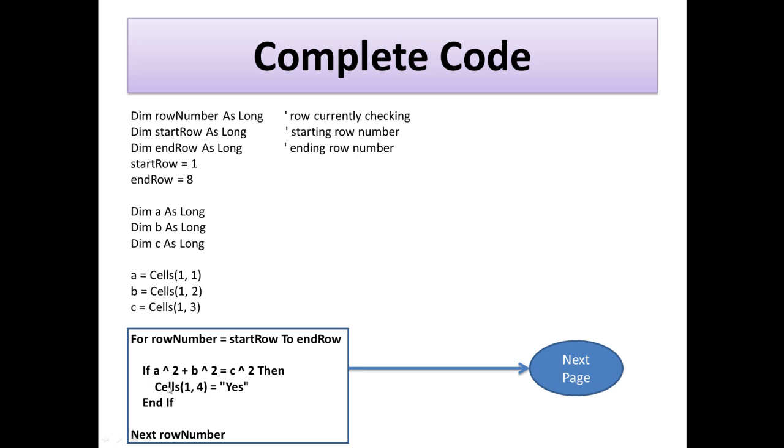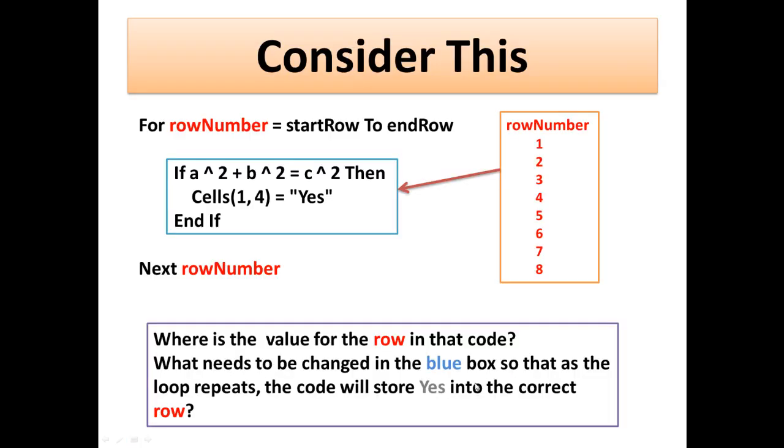But at the same time, let's just go ahead and look at this for loop. Now, the for loop is basically taking a variable, row number, and it's changing that variable from start row to end row. And that's what we see in the box here. As the loop goes around, row number has the value of 1, then the value of 2, 3, and so on until it hits 8. And every time we go around the loop, it changes by 1.